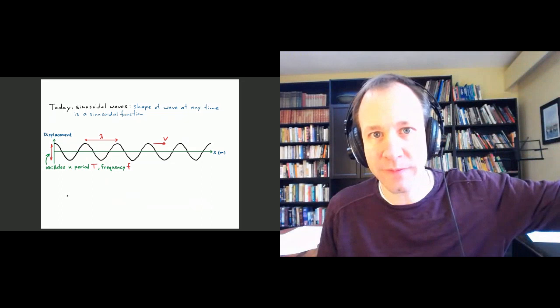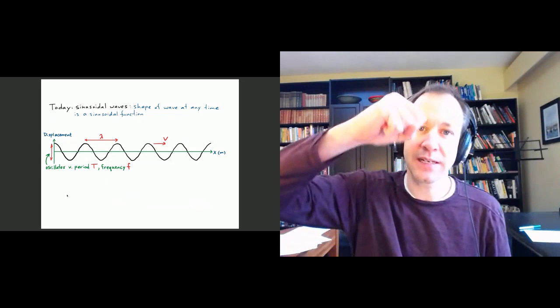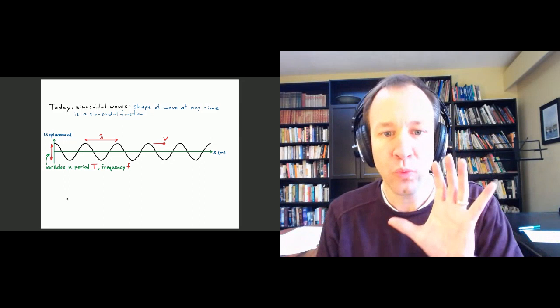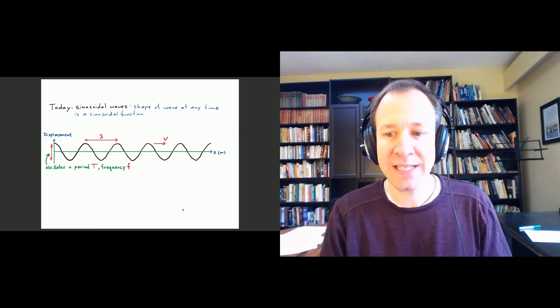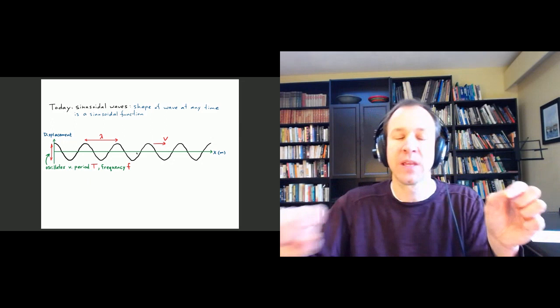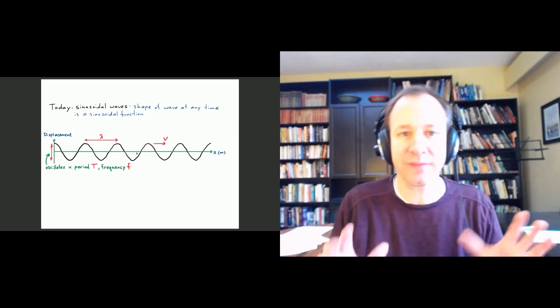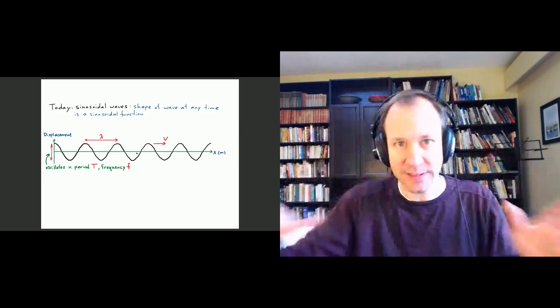That important case is where the shape of the wave not only remains the same as it moves, but the shape is a sinusoidal function. This is different from the sinusoidal functions we discussed before — those were functions of time, like A cos(ωt + φ), describing an individual oscillator. What we're showing now is the spatial dependence of a wave, for example on a string. As you go along the string, it's displaced upward at some points and downward at others, and the actual shape looks like a sine function — similar to the familiar shape of water waves.